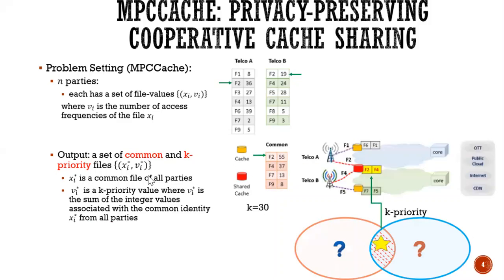Also, we have VI star must be K priority values. So for example here, VI star equals to 55 because it's a summation of 36 and 19. And then if K is equal to 30, then only two files satisfy the requirement, which is F2 and F4.